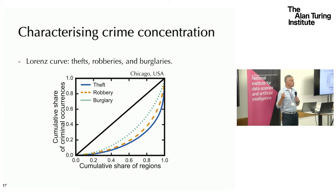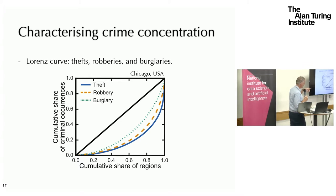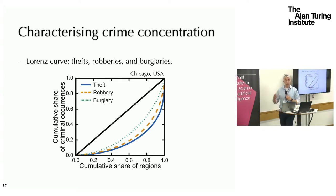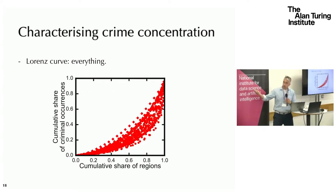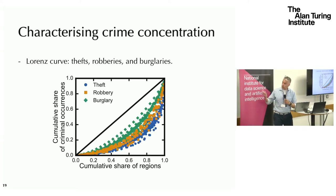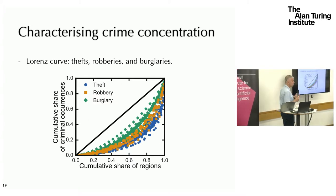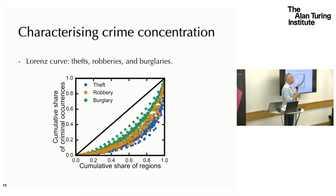We took Chicago first and looked at the three types of crime — theft, robbery, and burglary — and noticed that there is a difference between each of them. Theft concentrates more than robbery, which concentrates more than burglary. This was one city, so we went on and did this for every city we have. Looking at all the cities together, we can clearly show that there is a signature for theft, burglary, and robbery that are different from each other.